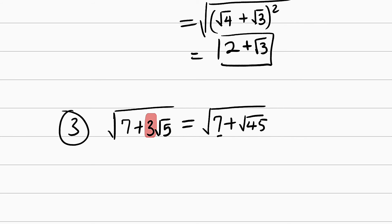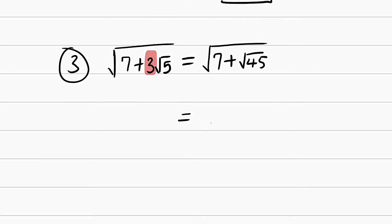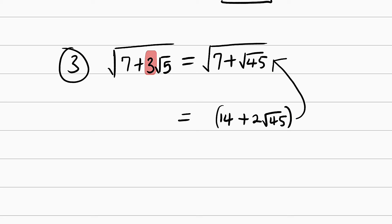And we have to multiply 7 also by 2. So we have something like this: 14, because 7 multiplied by 2 is 14, plus 2 multiplied by root 45 is 2 root 45. But remember that this is not equal to the original. To make them equal, we have to divide by 2, because we have multiplied by 2. So we are going to divide this by 2. Now we are free to take our square root. Since we have 14 plus 2 root 45, we can find two numbers which, when multiplied together, give 45, and when added together, give 14. And the numbers are 9 and 5, because 9 multiplied by 5 is 45, and 9 plus 5 is equal to 14.